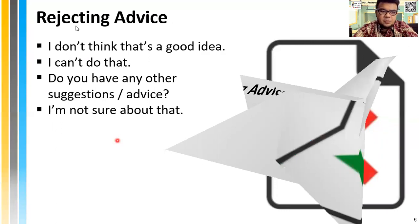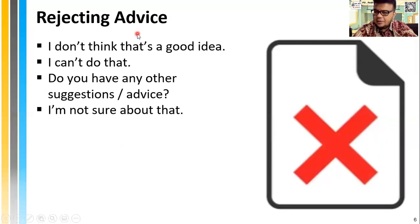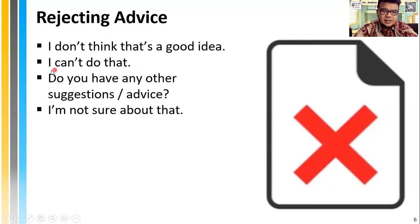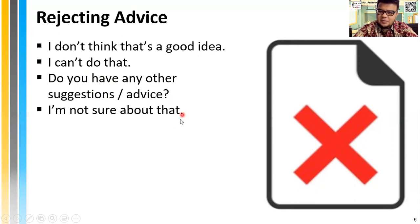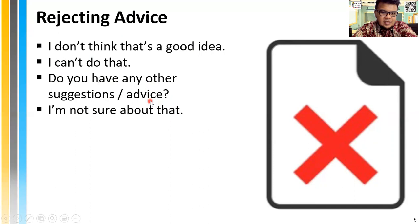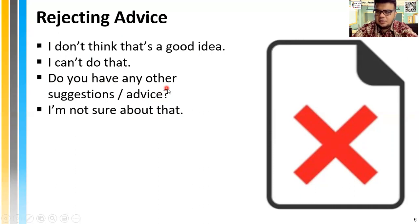The other option is to reject the advice because you think it's not appropriate or you don't agree with it. Expressions include: I don't think that's a good idea. I can't do that. Do you have any other suggestions or advice? I'm not sure about that — this is a polite, indirect way of showing hesitation or hinting that you'd like other suggestions.